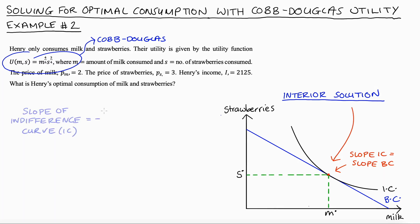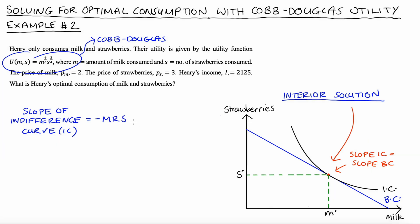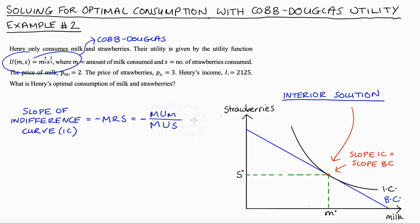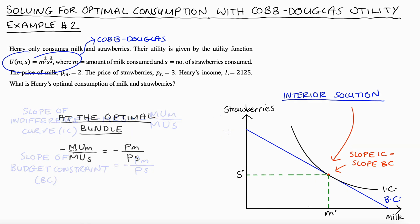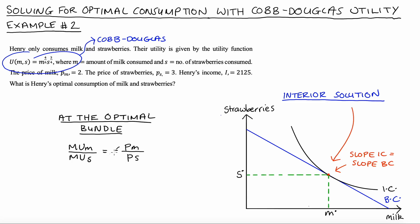The slope of our indifference curve equals the negative of our marginal rate of substitution, MRS, which equals the ratio of our marginal utilities — the marginal utility of milk divided by the marginal utility of strawberries. The negative of this ratio at the optimum equals the slope of the budget constraint, which is the negative of the price ratio: price of milk divided by price of strawberries. Because the negatives cancel out, the optimal point is where the ratio of marginal utilities equals the price ratio.